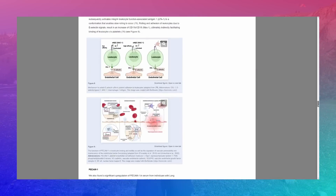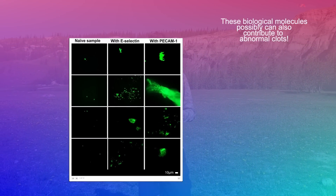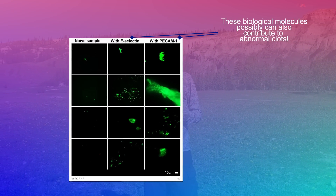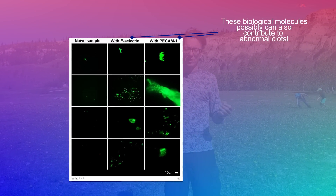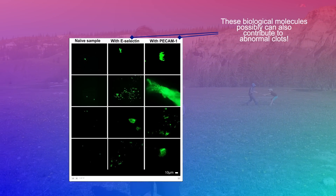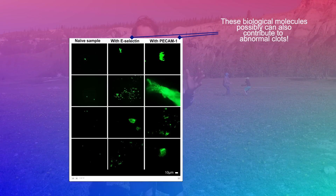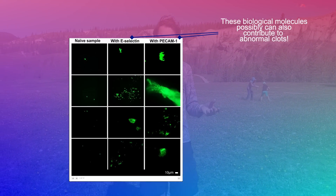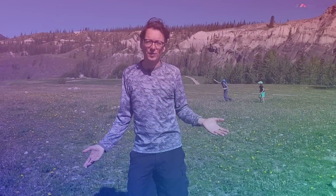Spike protein itself, of course, should also be measured. All of these molecules should be examined in the type of clots that might be found post-infection in individuals experiencing long COVID symptoms. The authors suggest we should be looking at the levels of these particular molecules — once we start measuring these, we know potentially what kind of threat we are dealing with.